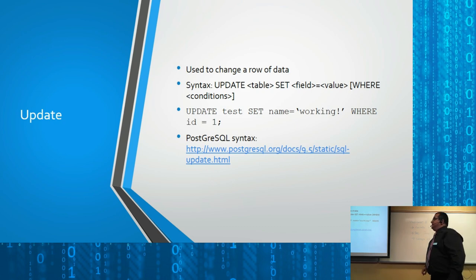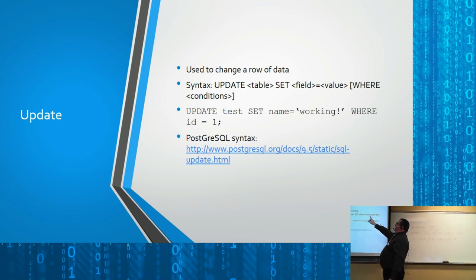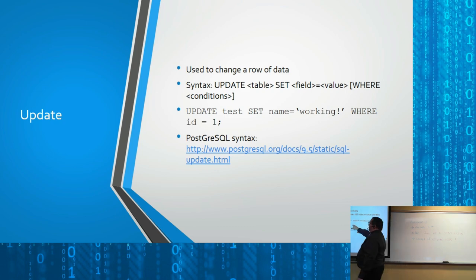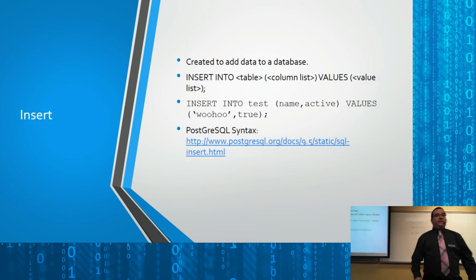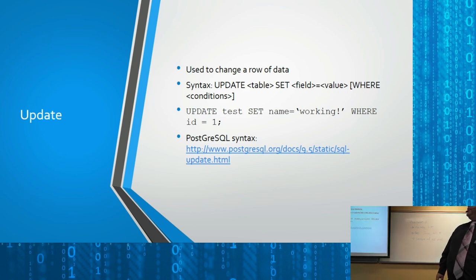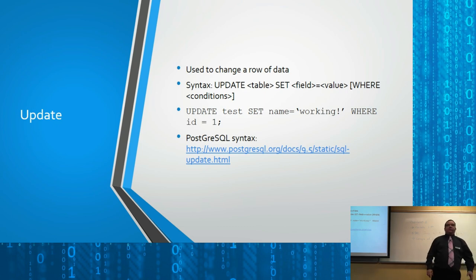The UPDATE command syntax is: UPDATE table SET key=value WHERE condition. For example: UPDATE test SET name = 'working' WHERE id = 1. You'll get familiar with the WHERE clause at the next lecture — that's what you use to filter records. Notice how completely different INSERT and UPDATE look from each other. There's no reason they couldn't have made them look similar; the designers just chose not to.